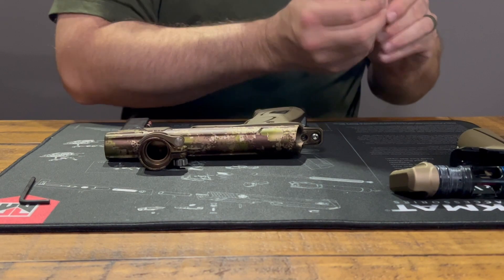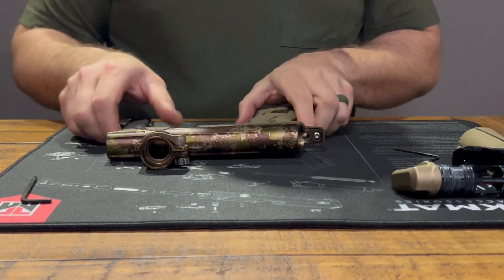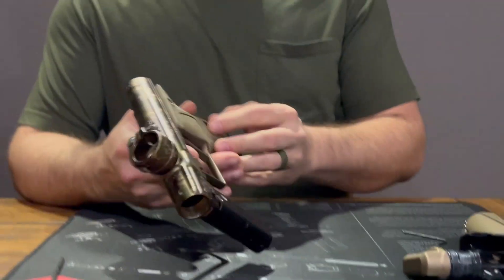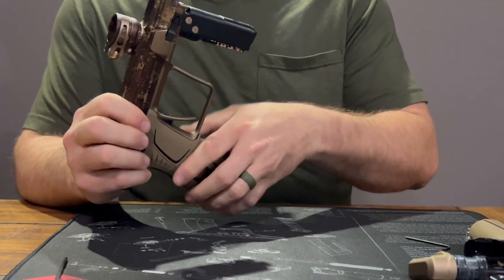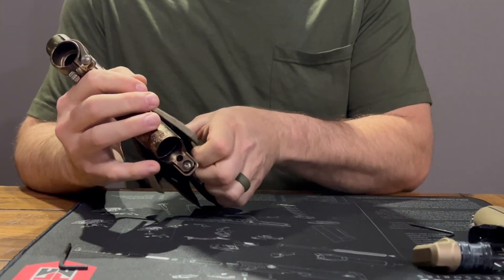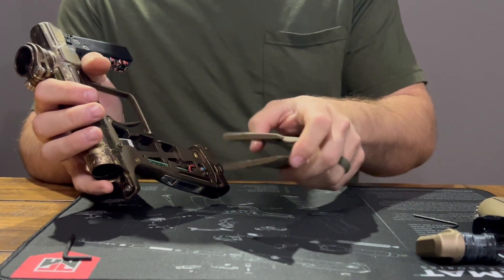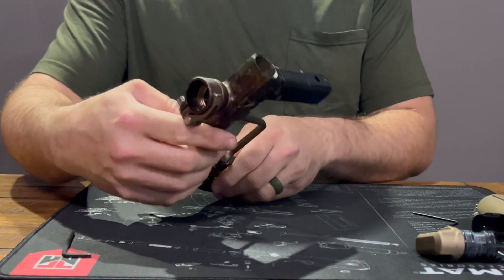This would also be the way to do it if you wanted to change your grips. You would just take those four screws out, and then your grips just literally slide right off. I do not want to change them on mine, but that is how you would do it.